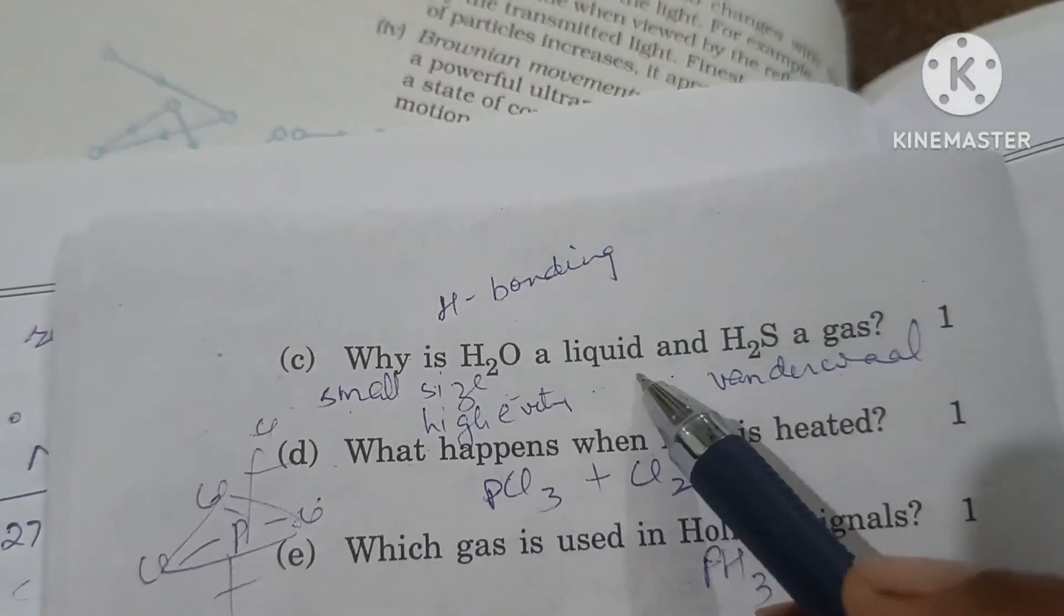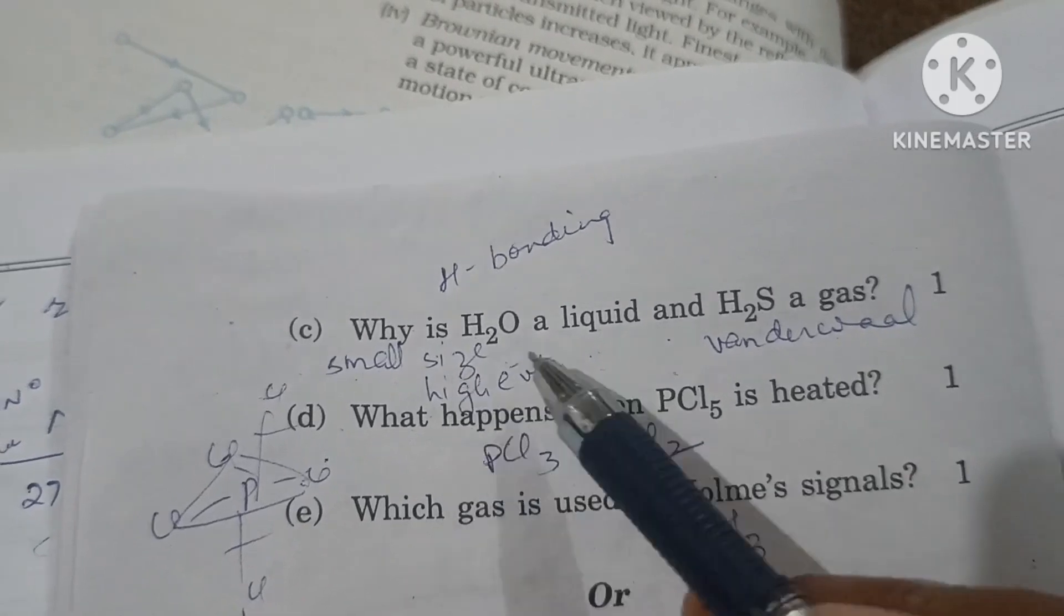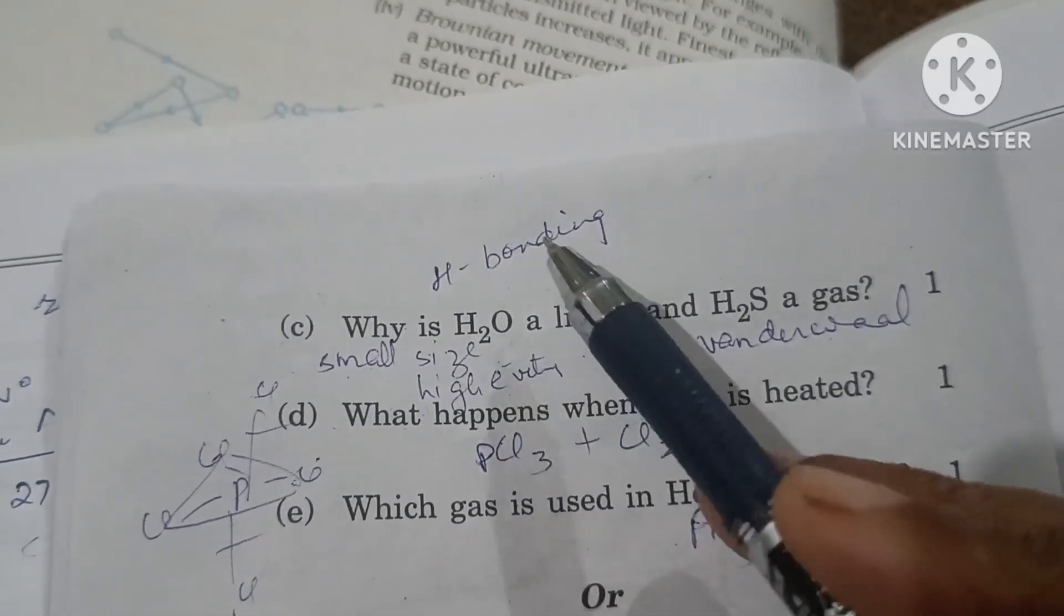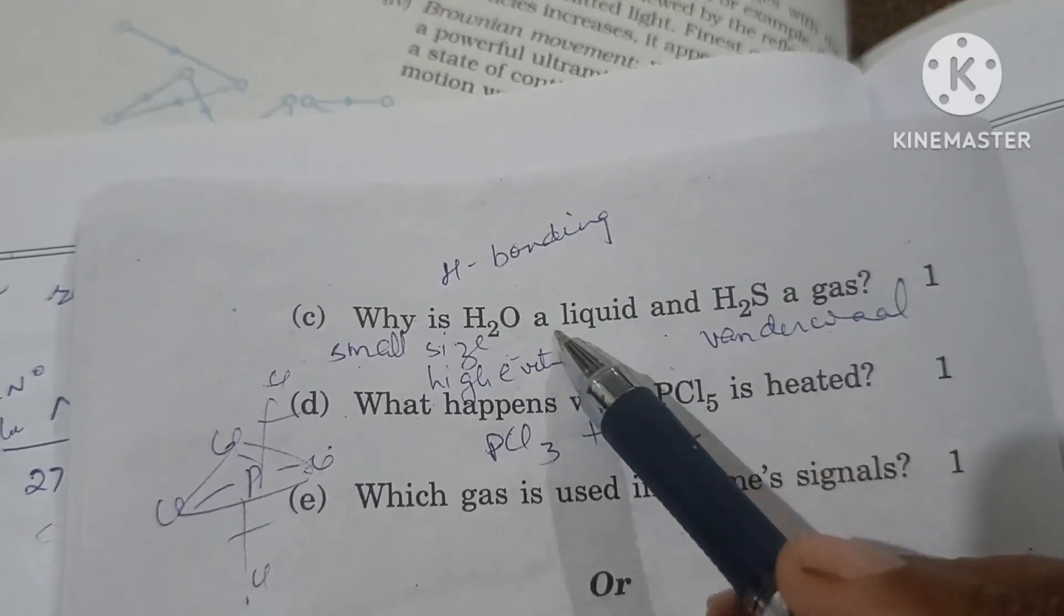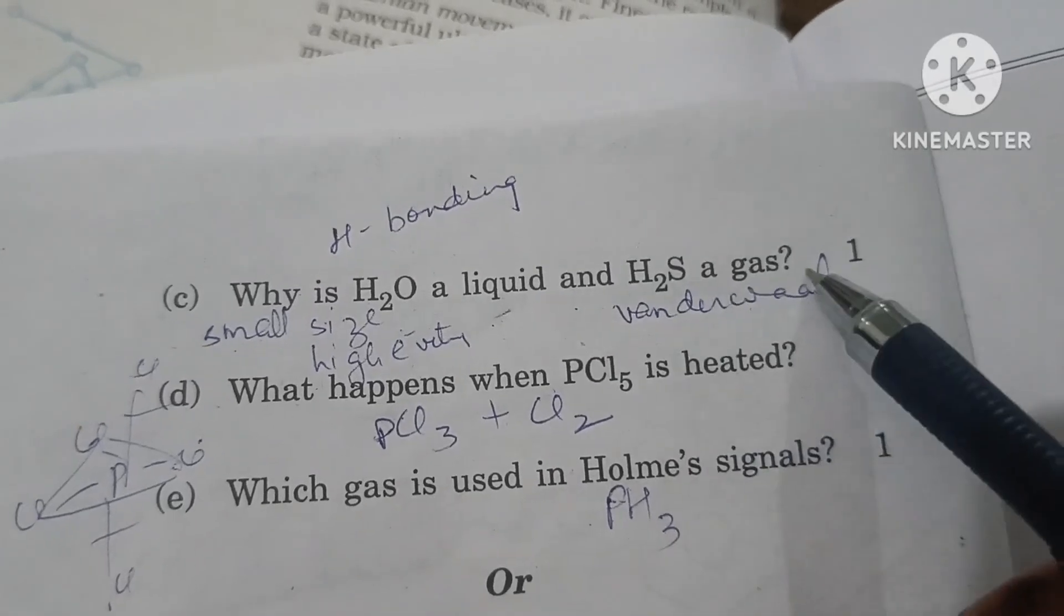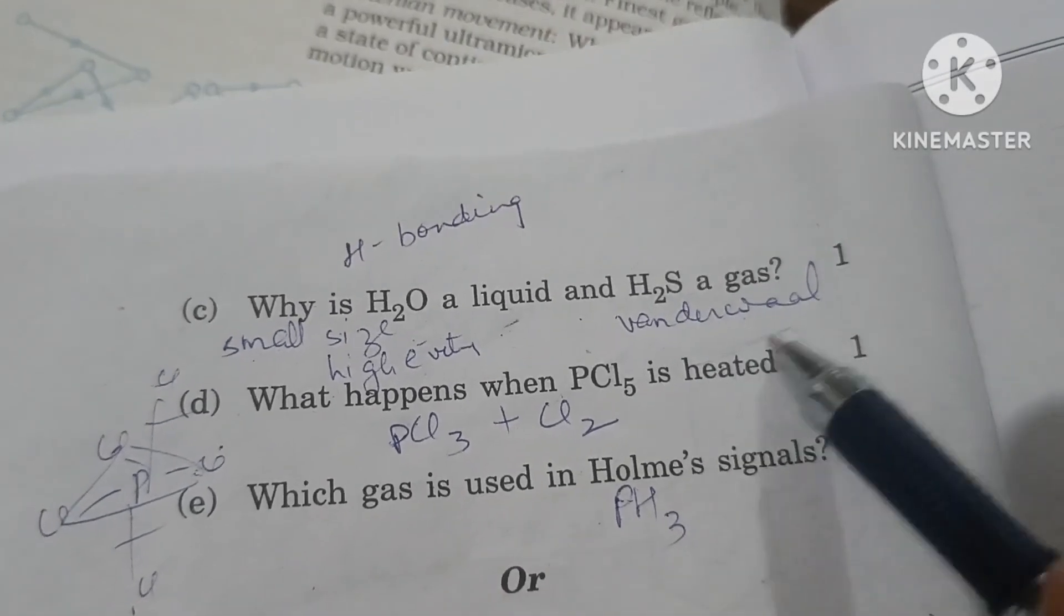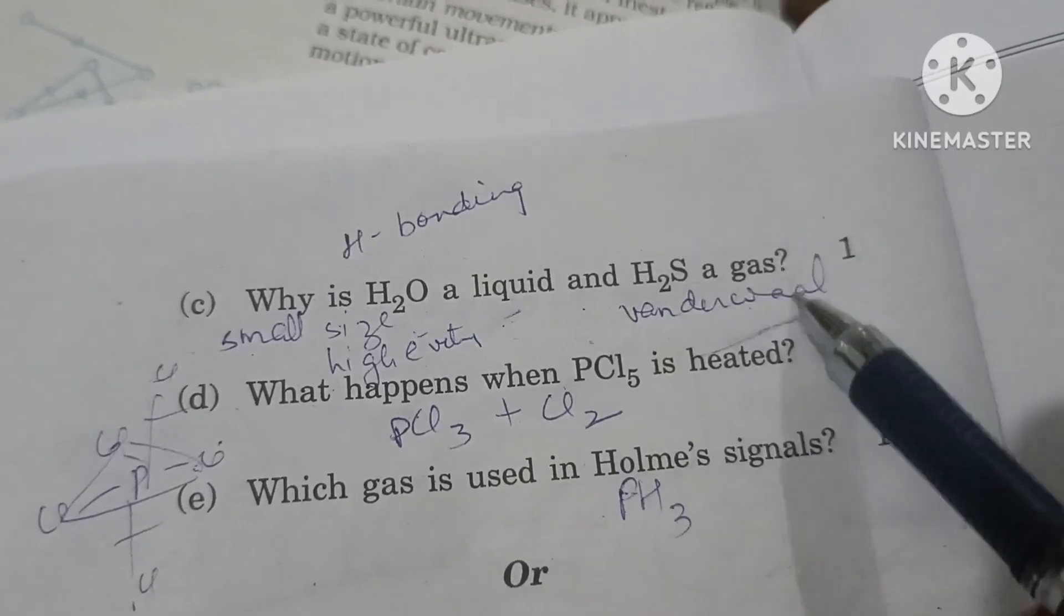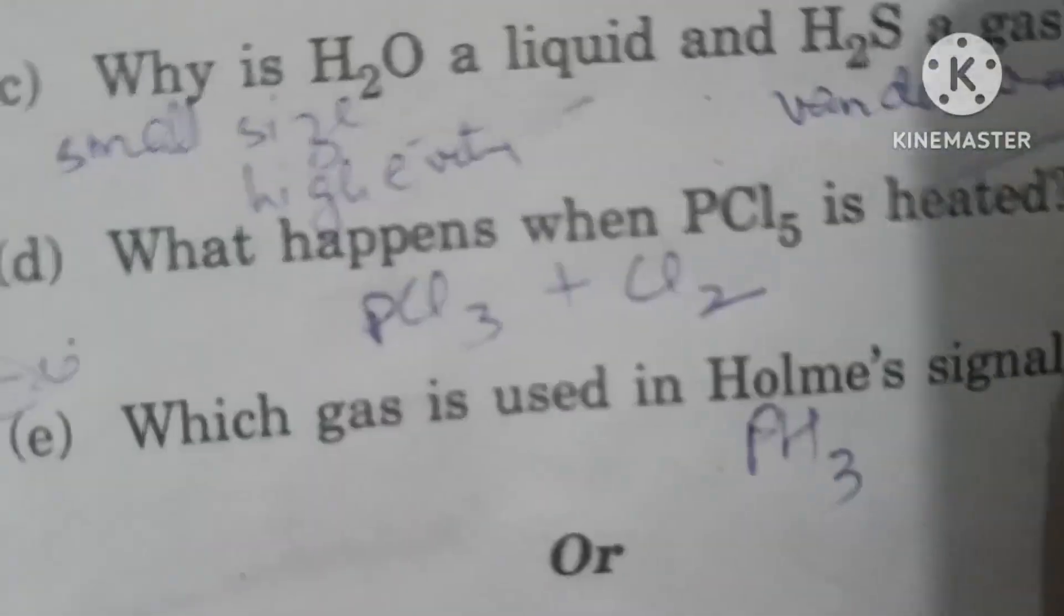Why is water a liquid? Because in water, the oxygen atom size is small and electronegativity is high, so hydrogen bonding occurs, requiring more energy. Boiling point is high, so it's liquid. Whereas in H2S, hydrogen sulfide molecules have weak van der Waals forces of attraction, boiling point is low, so it's a gas.